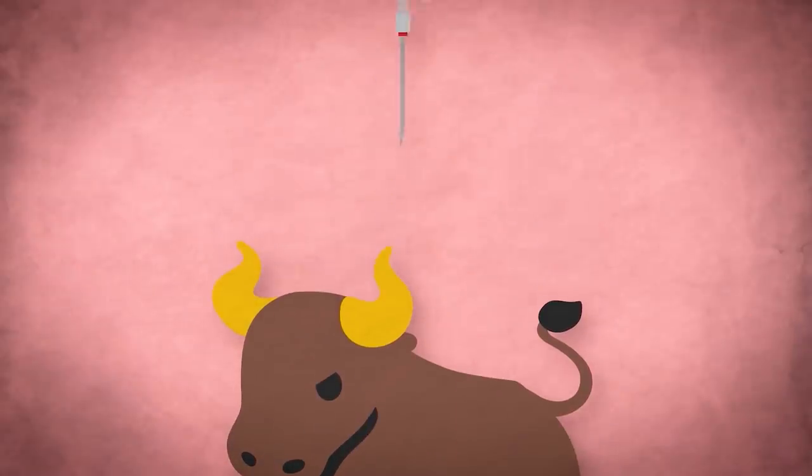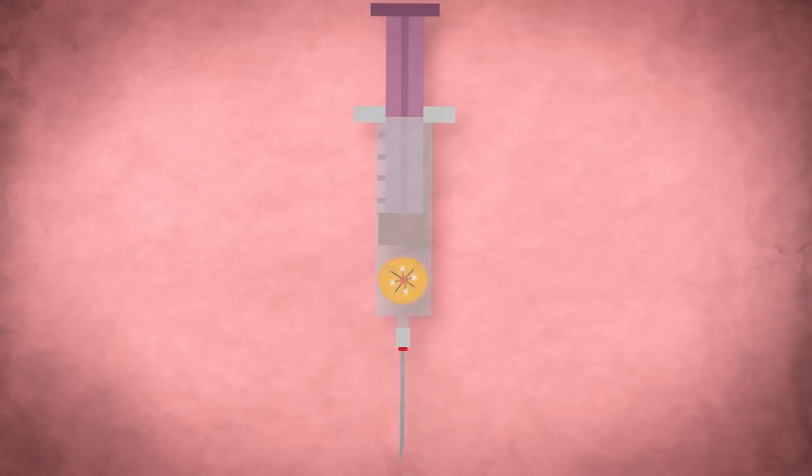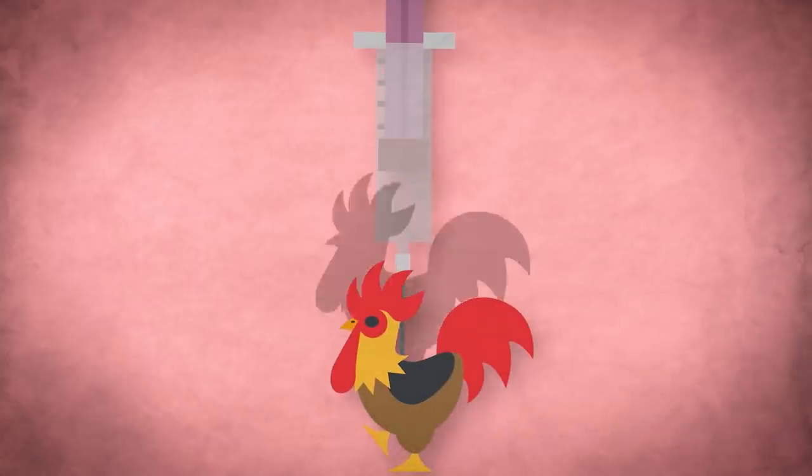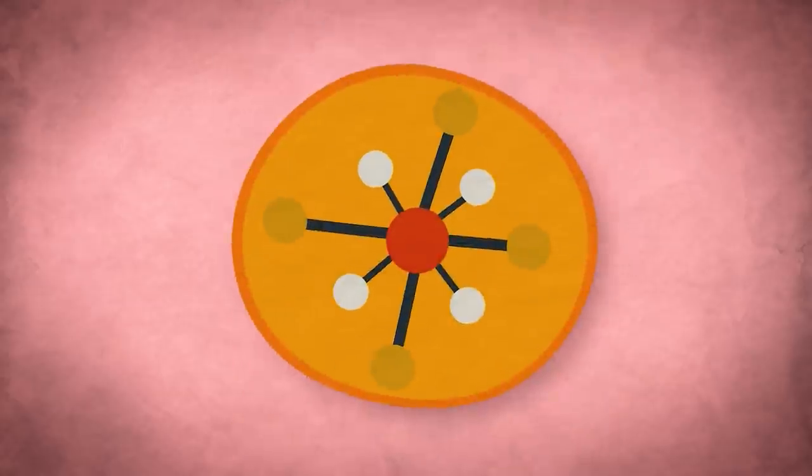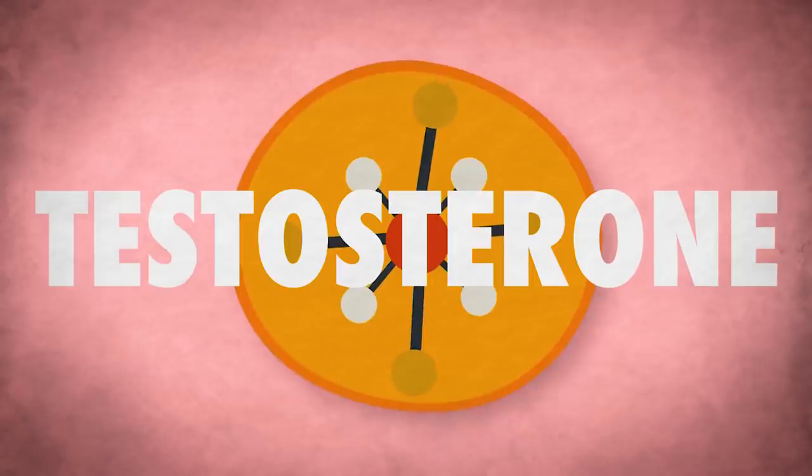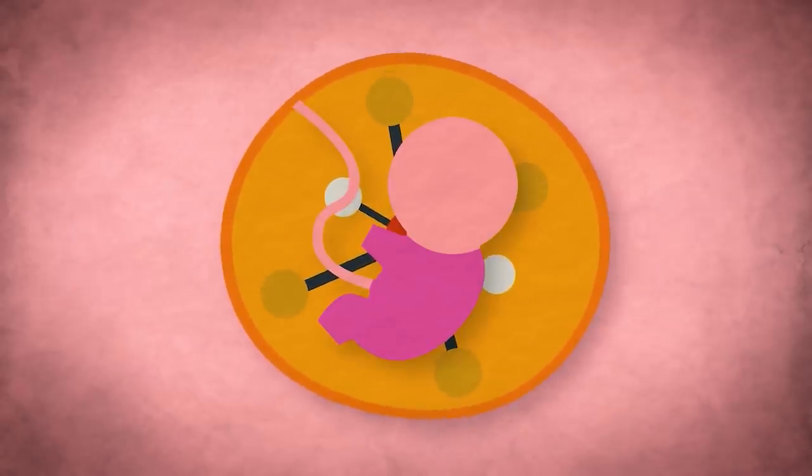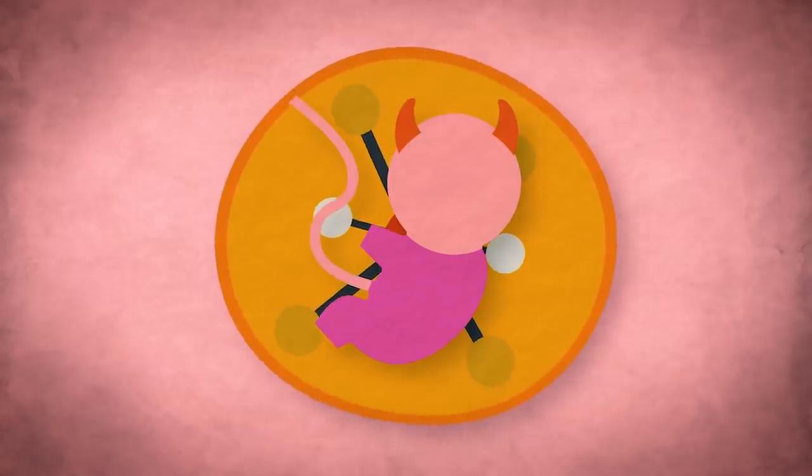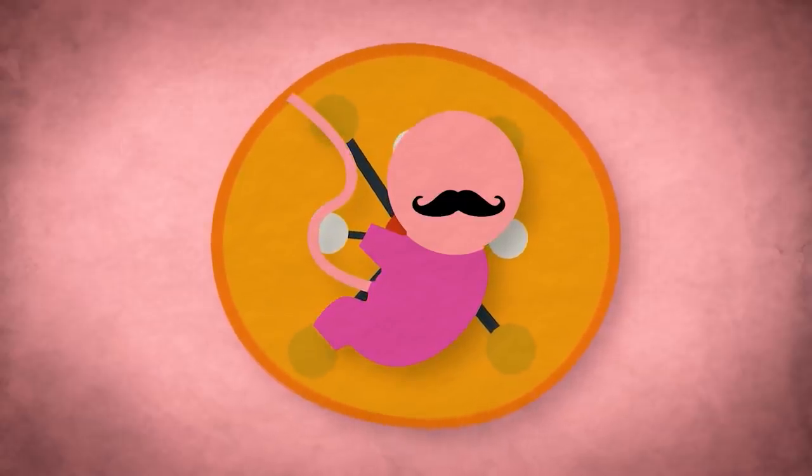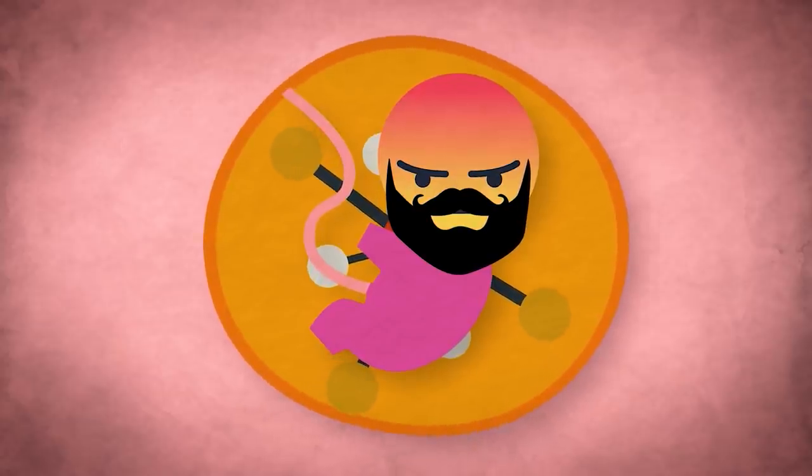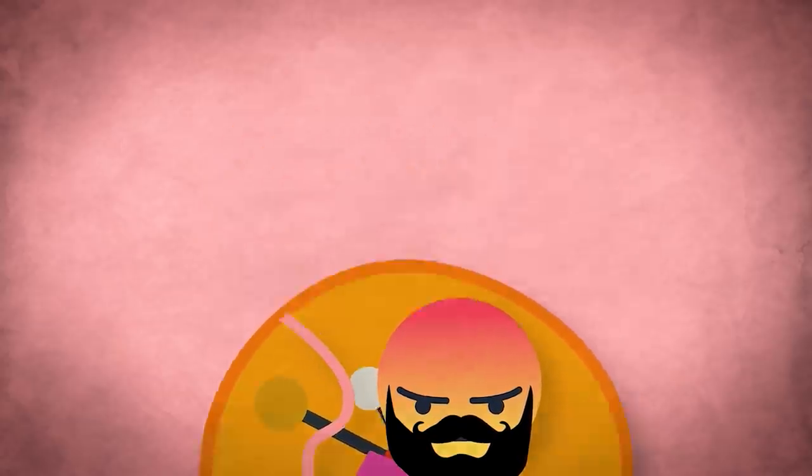Koch took these testicles and extracted a mysterious substance from them, which, when administered to a castrated rooster, miraculously resurrected some semblance of the fowl's former manhood. What Koch had distilled from all those testicles was testosterone, the primary male sex hormone. It's the catalyst that turns a perfectly good embryo into a potentially murderous male. Testosterone not only sparks the production of male sexual characteristics, it can affect our behavior. And it is strongly associated with increased aggression.